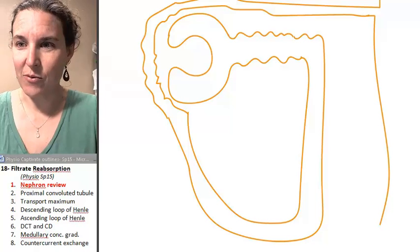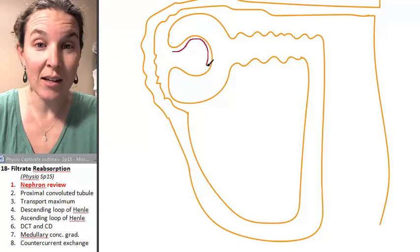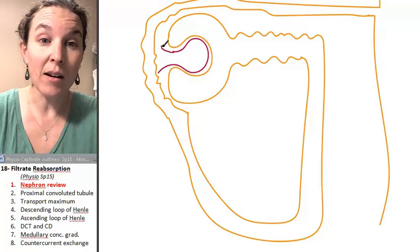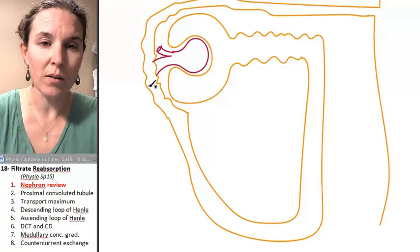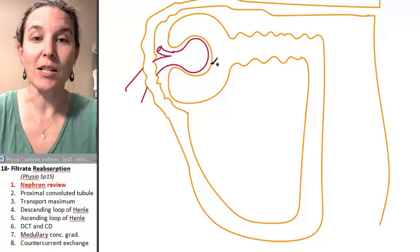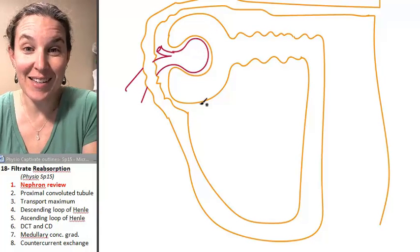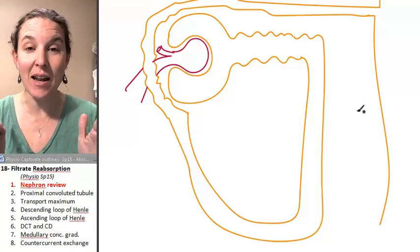Perfect, right? We remember that the glomerulus is the knot of capillaries where the blood is filtered out of the capillary and into Bowman's capsule. You followed all that. This is my nephron.